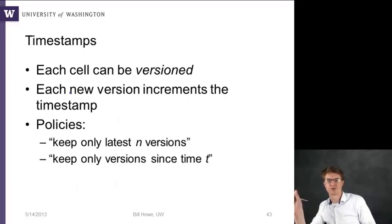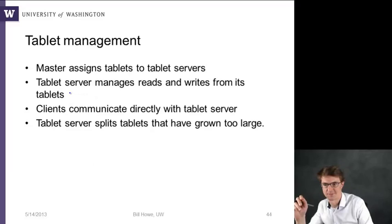And then each cell can be versioned, which is the third part of that key lookup. Row ID, column name, and timestamp. And each new version increments that timestamp. And so here you can enact different kinds of policies where you only keep the latest N versions or you keep only the versions since a given timestamp.